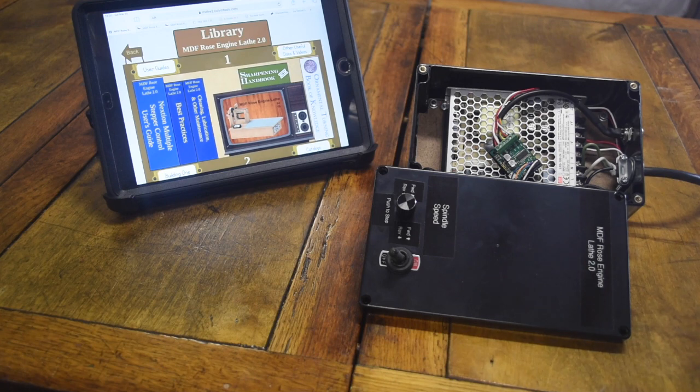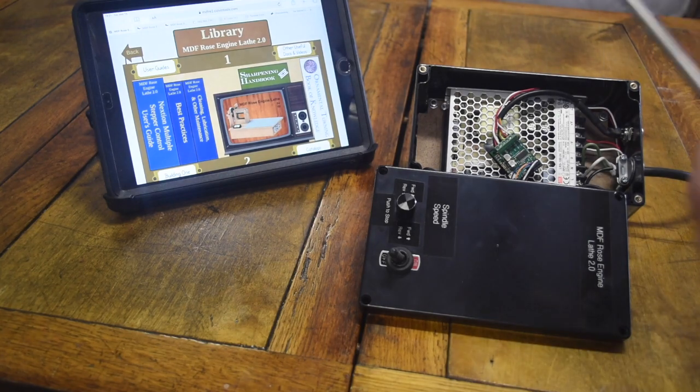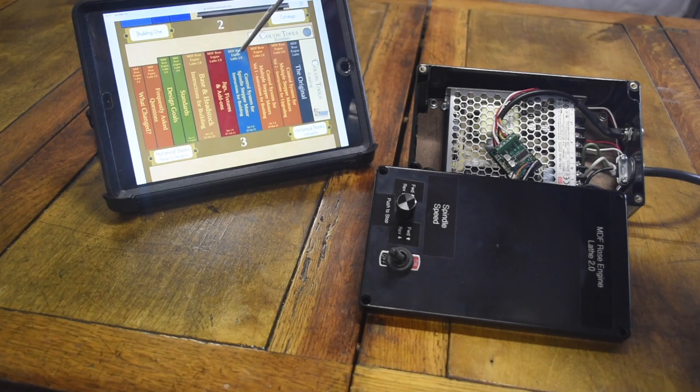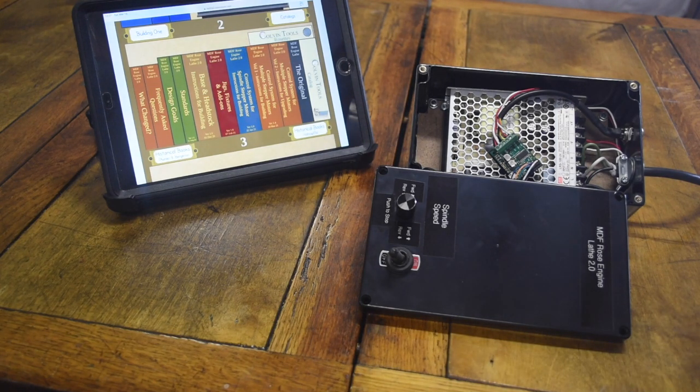If you want to make one of these yourself, I recommend you look at the MDF Rose Engine Lathe 2.0 Library, which is here. And on the second shelf, you'll see there's the blue manual here. And that blue manual gives you all the directions you need to make this.